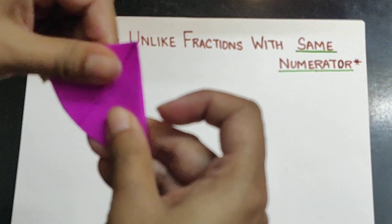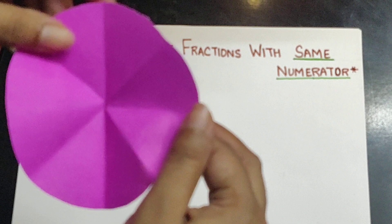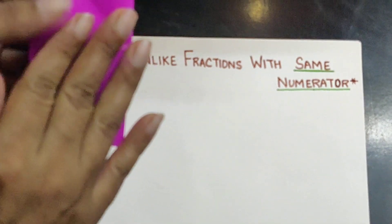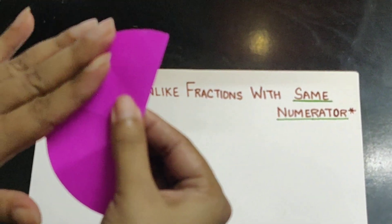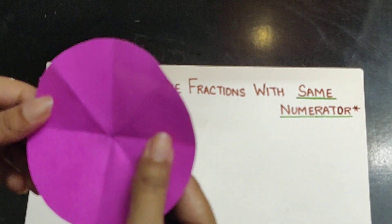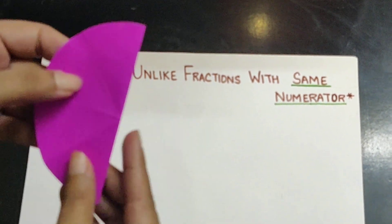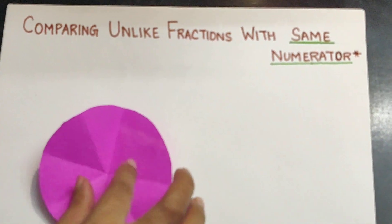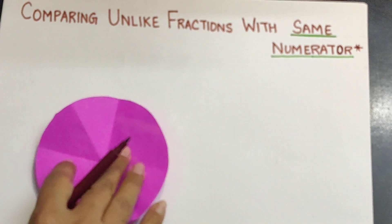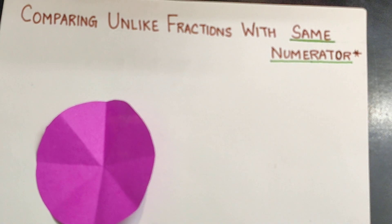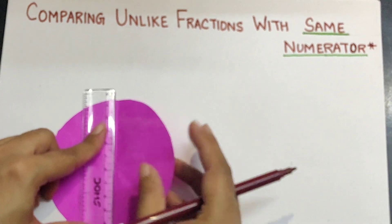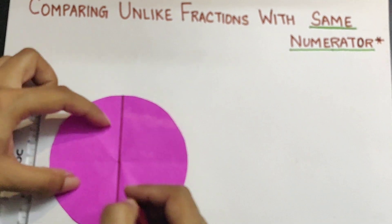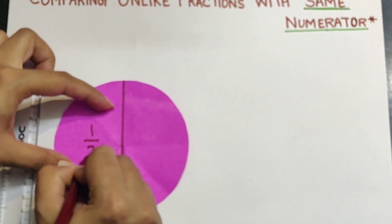So we will draw the lines and show these parts separately. We will be representing the different parts. So we are first of all representing the 1 by 2 part — that is when the circle is divided into two equal parts. So this represents 1 by 2. We will represent this fraction by just drawing the line. So this represents 1 upon 2.